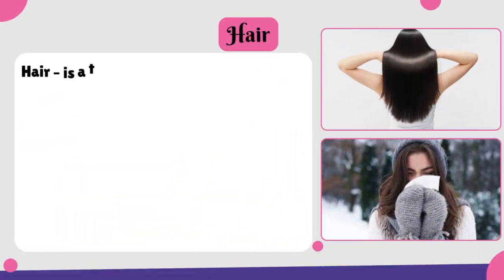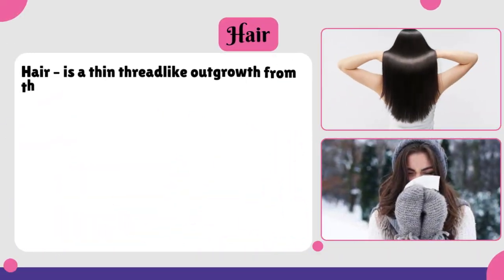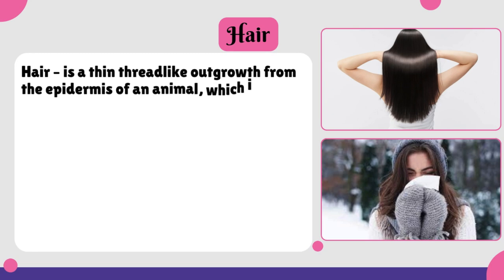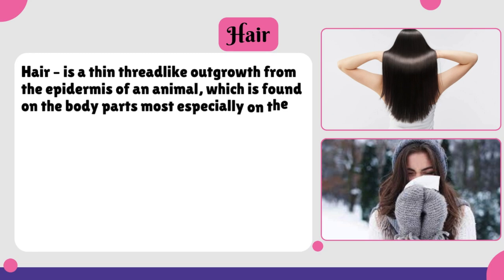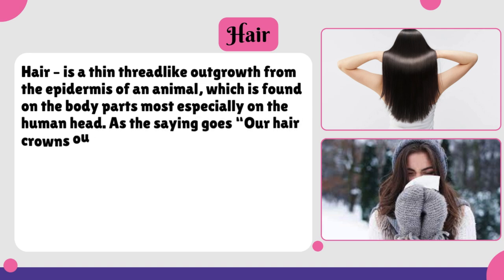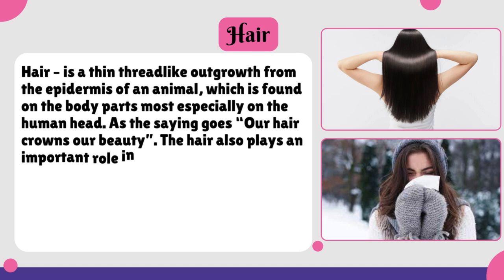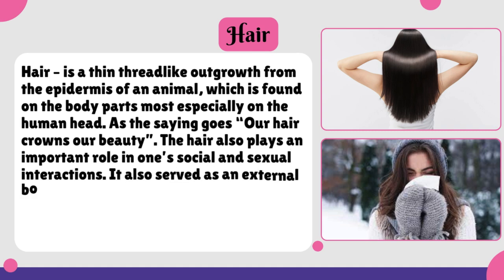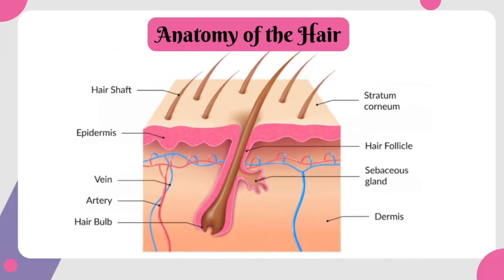Hair is a thin, thread-like outgrowth from the epidermis of an animal, which is found on the body parts, most especially on the human head. As the saying goes, our hair crowns our beauty. The hair also plays an important role in one's social and sexual interactions. It also serves as external body protection. Anatomy of the hair.